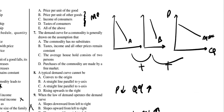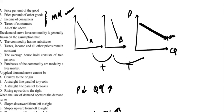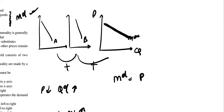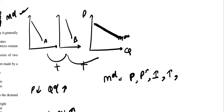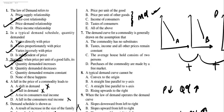All these other factors — price of relative goods, income of the consumer, taste and preferences, and future price expectations — do affect market demand, but they are not shown through the curve itself. So when the question asks what market demand is a function of, the answer is E: all of the above. These factors cause movements along or shifts of the demand curve.